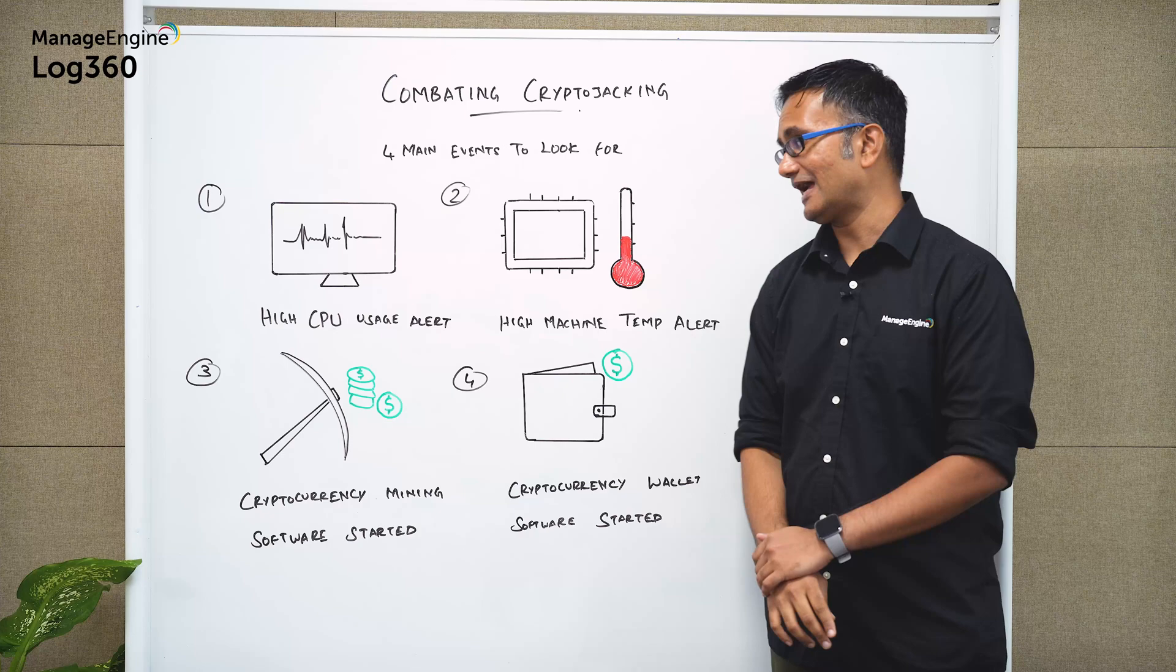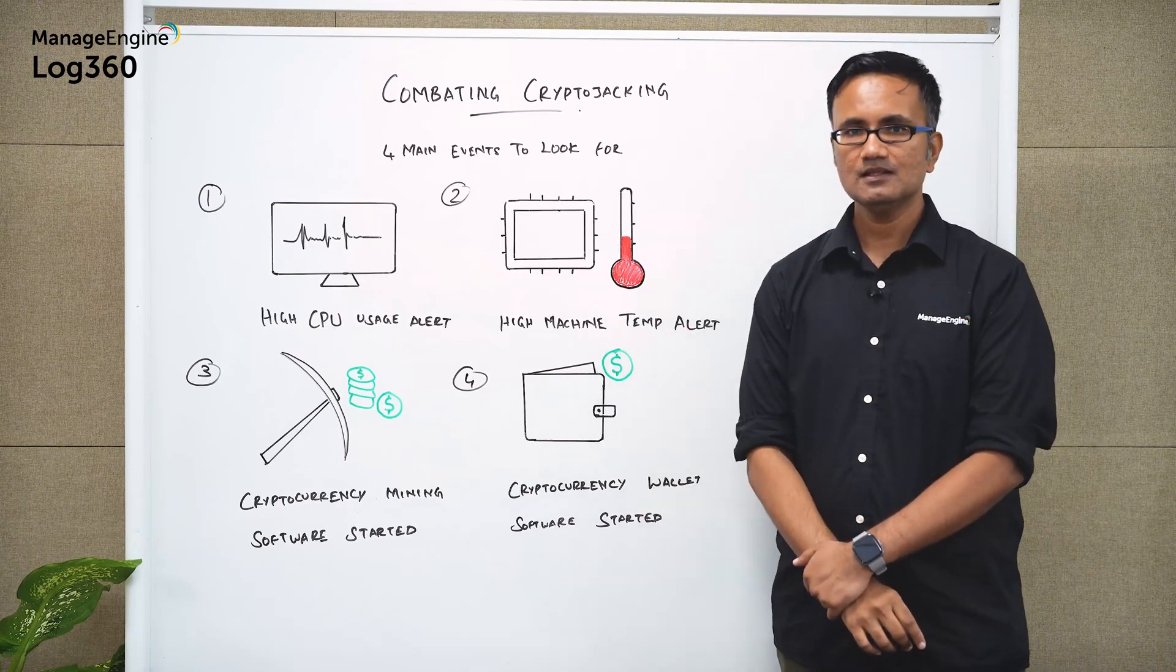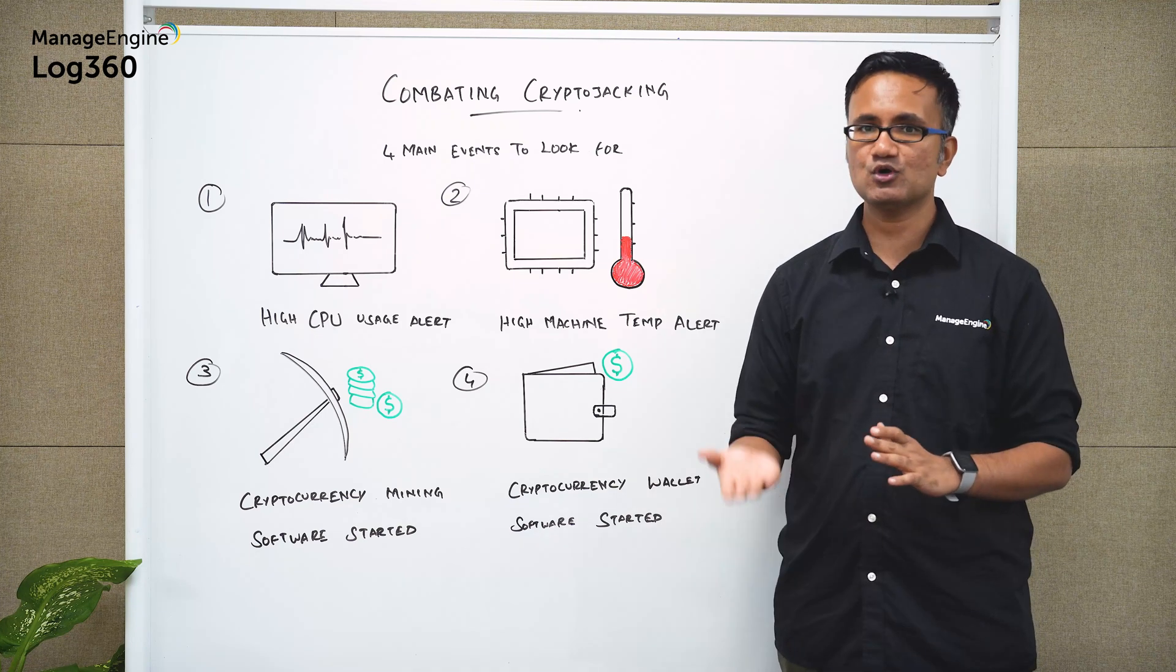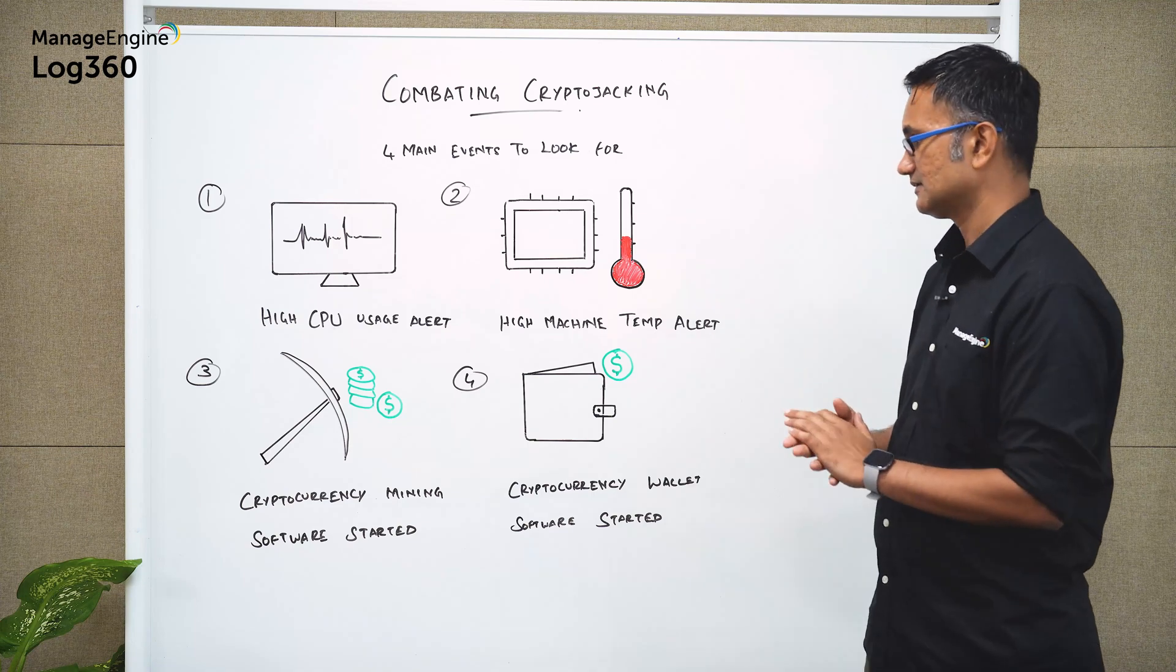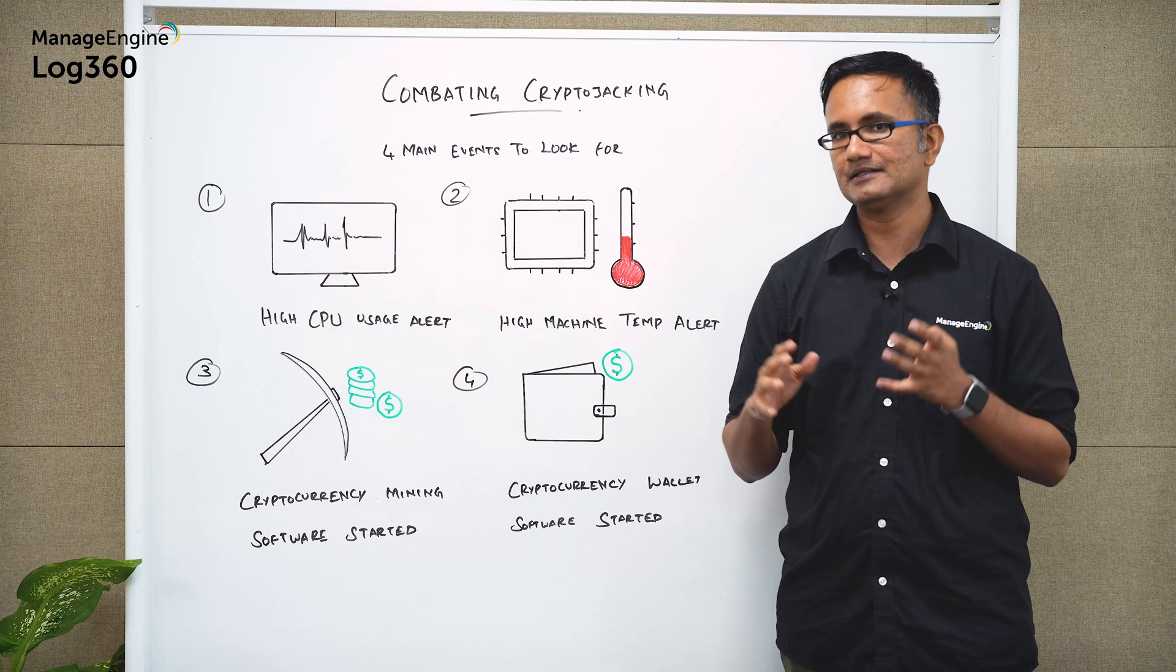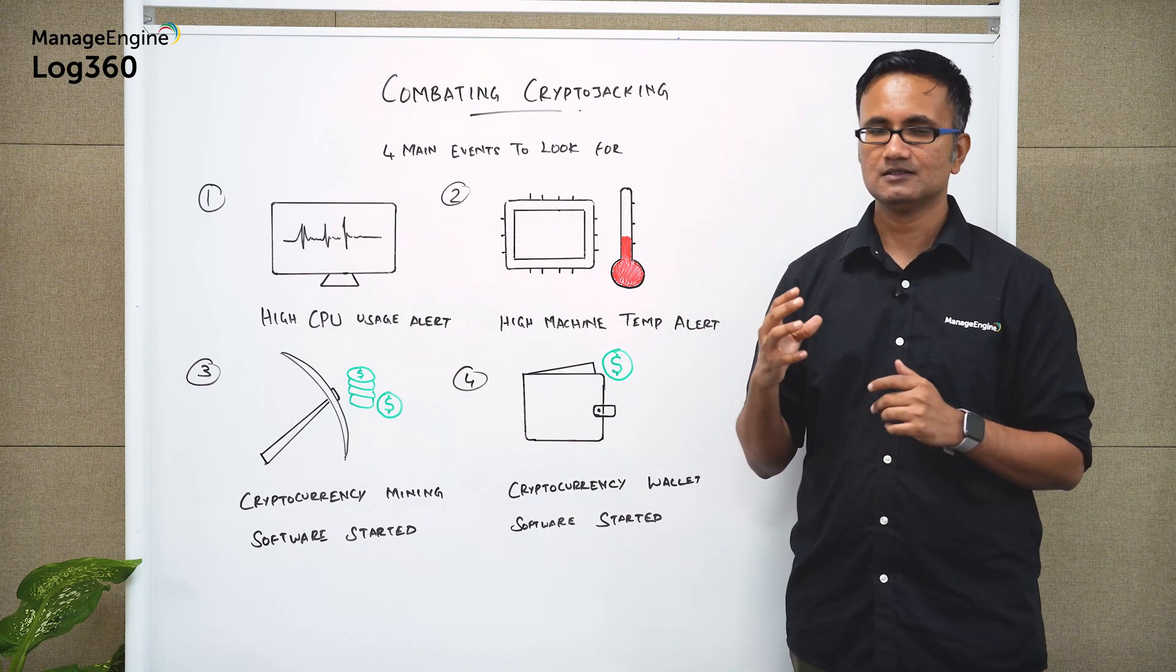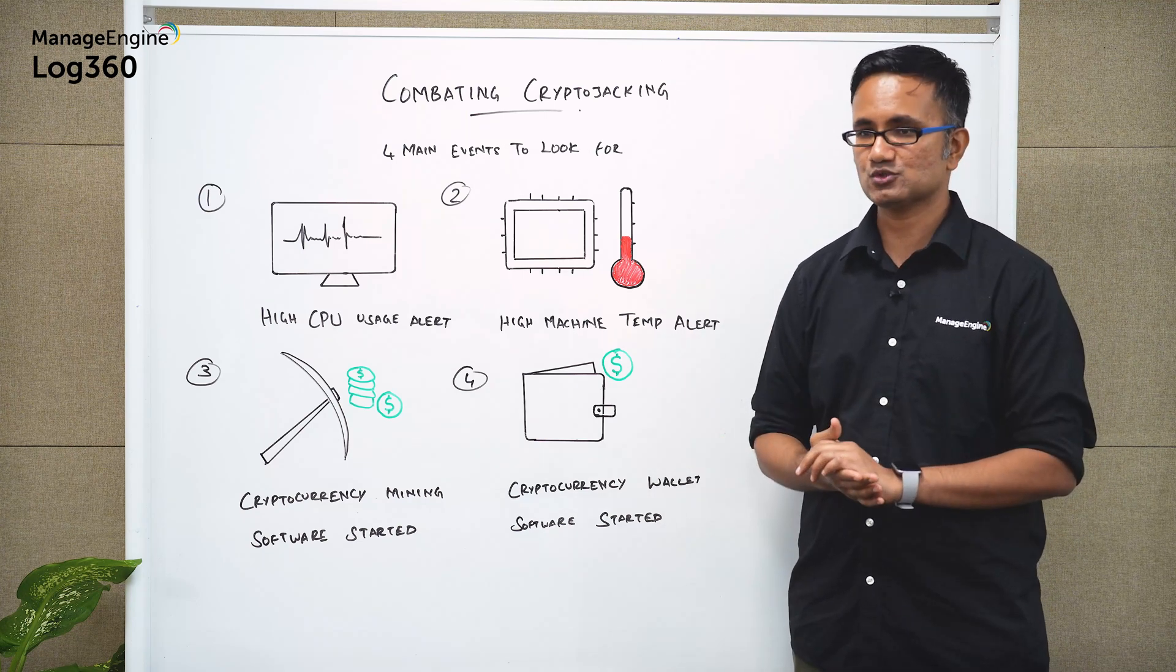The second thing that you may want to look at is high machine temperature alert. Again if the temperature of the machines that you're monitoring goes beyond a certain threshold again that would be a cause for concern. Now this temperature can vary for different devices and it is all from the chipset from the chip itself that will signify whether the temperature has gone beyond the threshold or not.